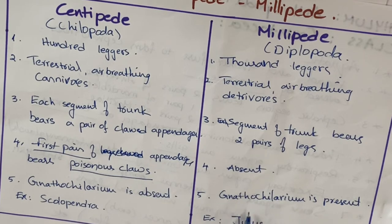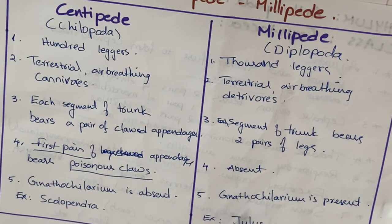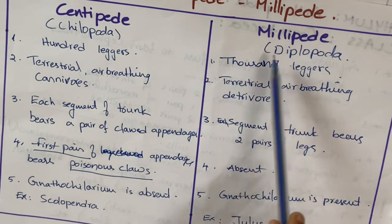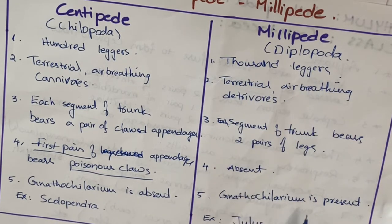Gnathochilarium is absent in centipedes but present in millipedes. Gnathochilarium is a flap-like structure formed by the union of a pair of maxillae. It is a characteristic feature of millipedes.